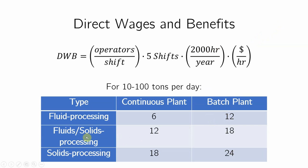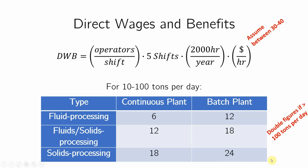If it's a fluid-solids plant, use 12 to 18 operators per shift. If it's solid processing alone, use 18 to 24. And if your production exceeds 100 tons per day, you can double these values.